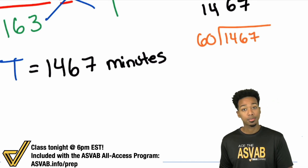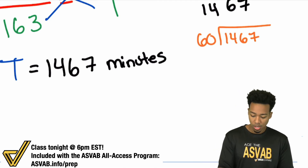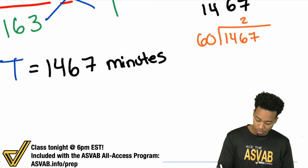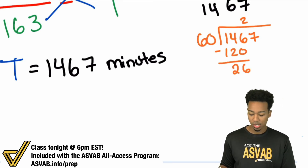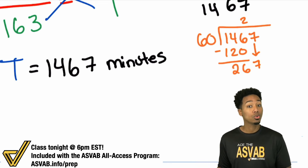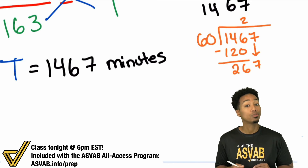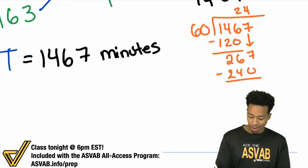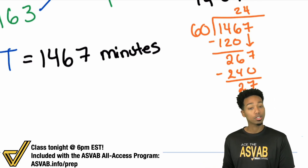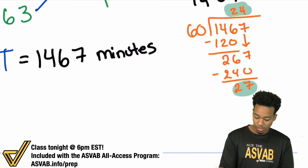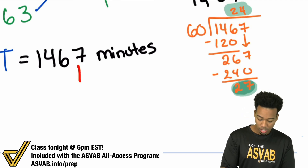Let's do the division: 60 doesn't go into 1, or 14, but goes into 146 twice — 60 times 2 is 120, leaving 26. Bring down the 7 to get 267. 60 goes into 240 four times — since 6 goes into 24 four times — so 60 times 4 is 240. Subtract to get 27 remaining. That gives us 24 hours with 27 minutes left over.